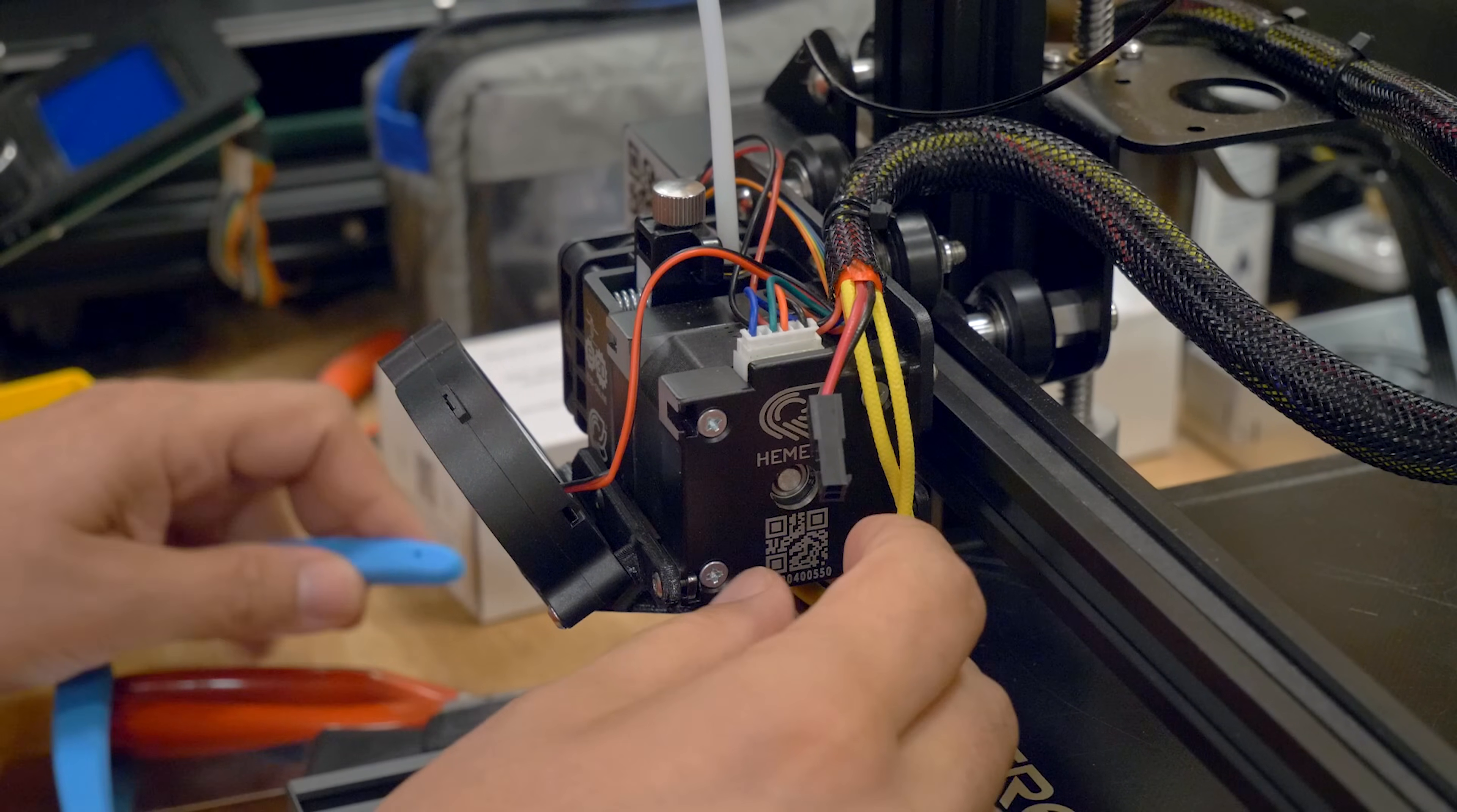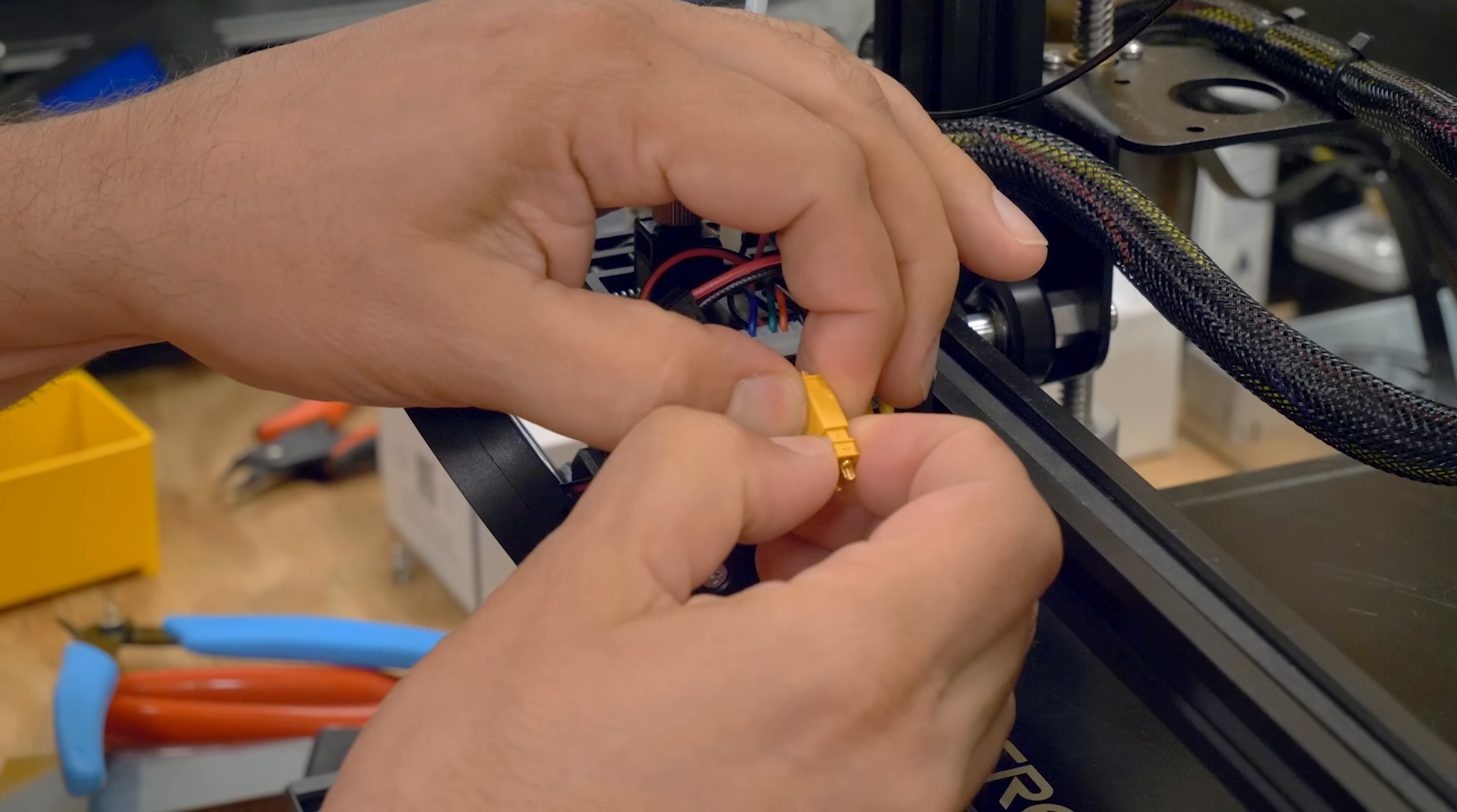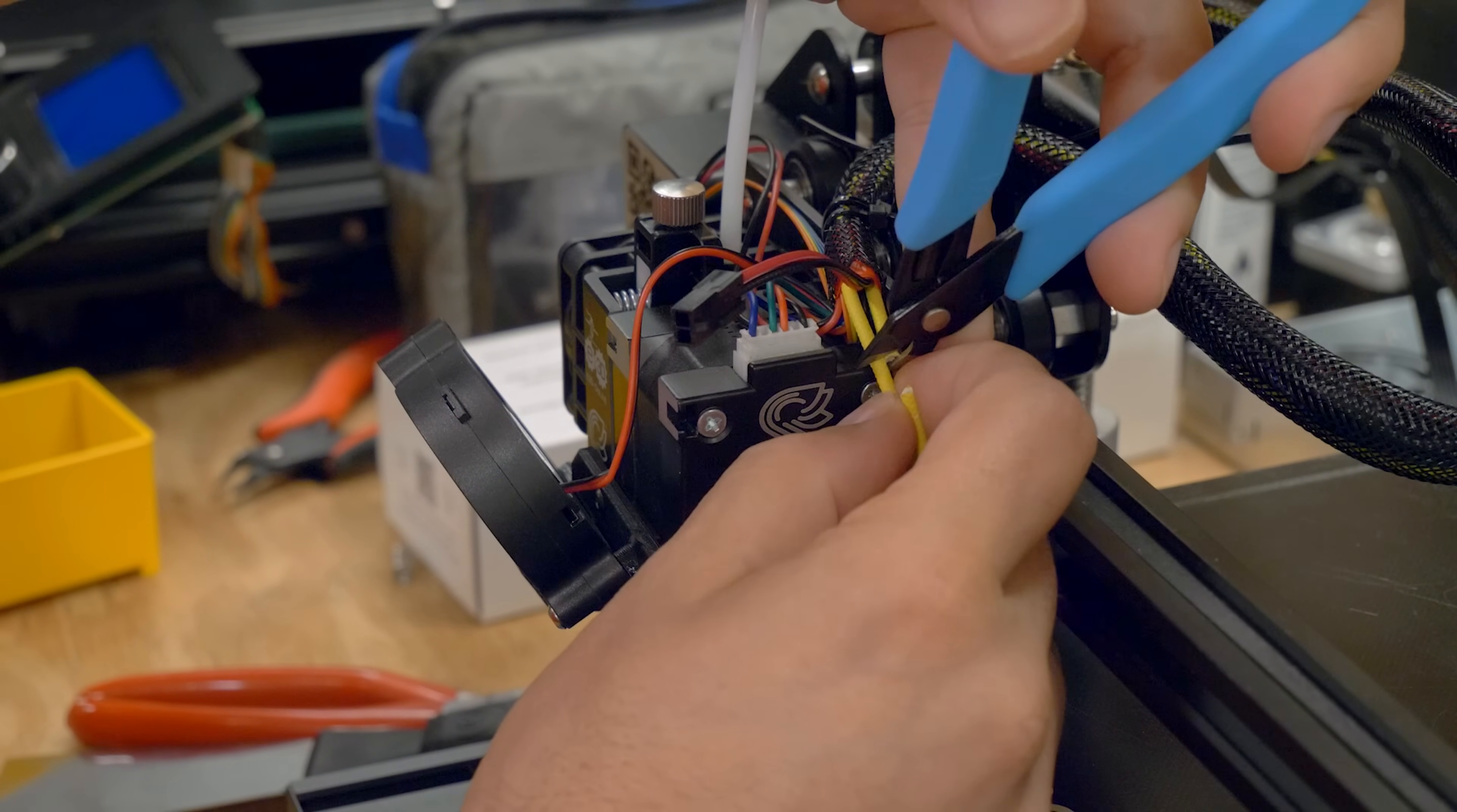But the heater cartridge doesn't have a connector and I'm not really sure why that is, it creates a problem. So I'm going to install a connector and the connector that I'm going to install is this little XT30 here. Now, maybe there's a good reason why this didn't come with a connector on it. Maybe I'm making a terrible mistake or maybe not, but guess what? Ha ha, we're committed now boys.